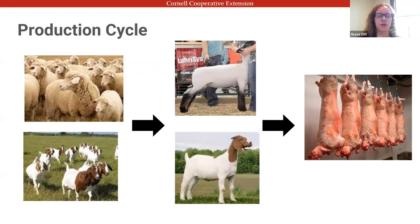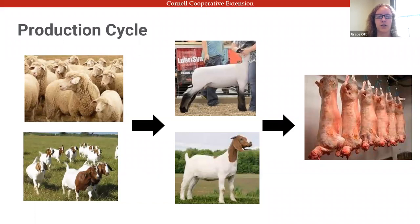Lambs will typically be weaned at about eight weeks old and goat kids at about six to eight weeks old — that's when they are separated from their mothers and from milk as a source of nutrition. Where they go from there depends on the area of the U.S. In the Midwest there are some lamb feedlots for feeding lambs to market weights, but they're not as prominent on the East Coast, which is more geared toward smaller livestock farms.